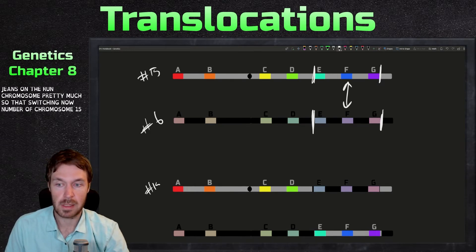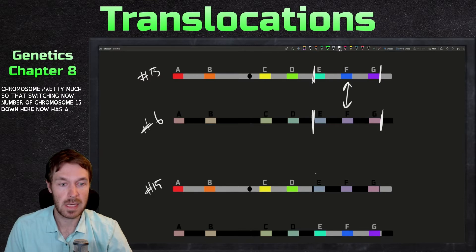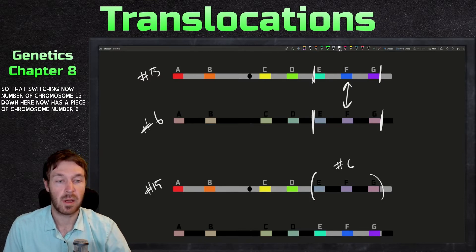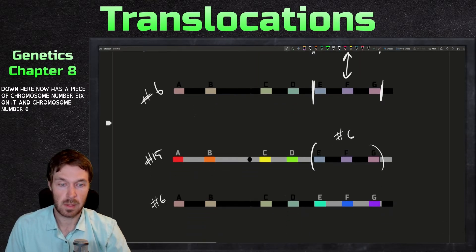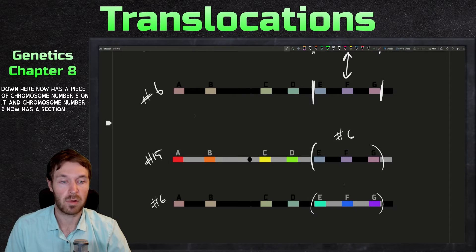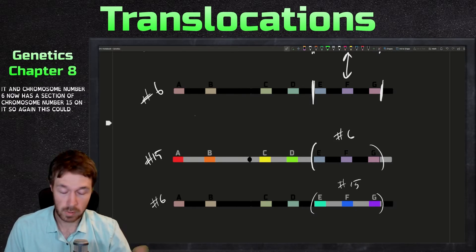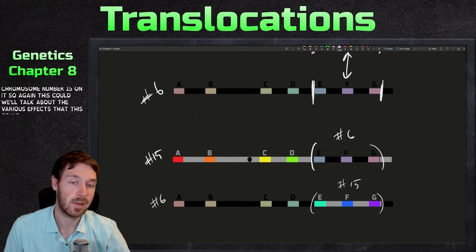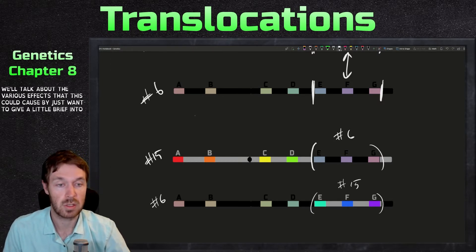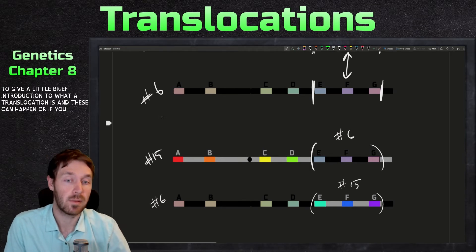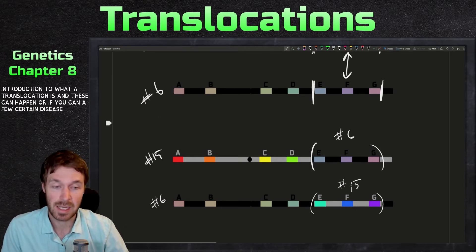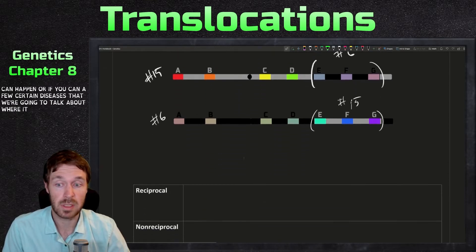Number chromosome 15 down here now has a piece of chromosome number six on it. And chromosome number six now has a section of chromosome number 15 on it. So again, we'll talk about the various effects that this could cause, but I just want to give a little brief introduction to what a translocation is. And these can happen. There are a few certain diseases that we're going to talk about where it actually does happen.